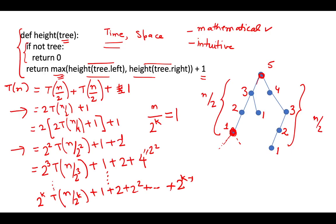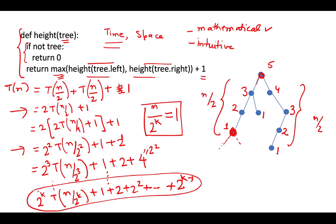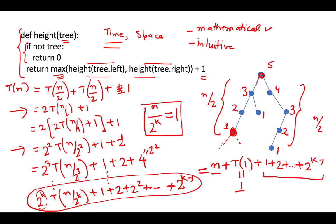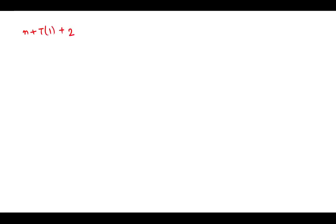Now, 2^k = n, so T(n/2^k) = T(1). T(1) is 1, since finding the height of a tree with one node takes constant time. So our expression becomes n · 1 + 1 + 1 + 2 + … up to 2^(k−1), which is n plus 1 plus this geometric series.